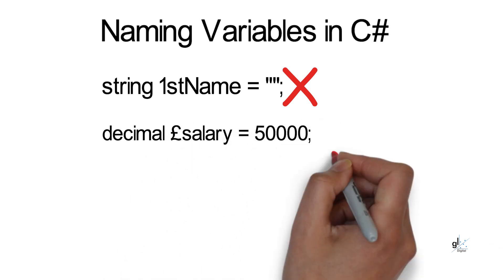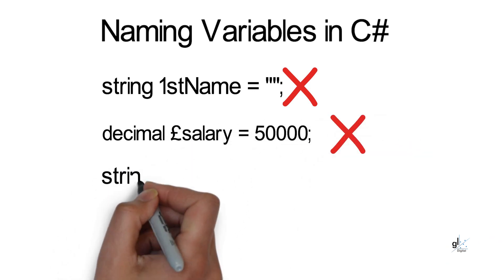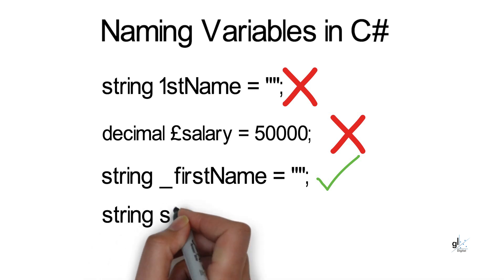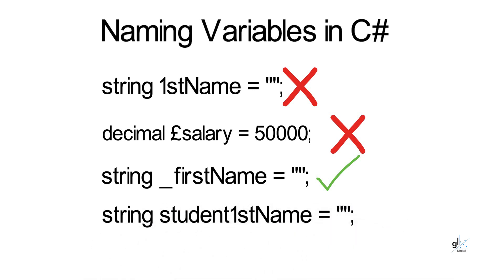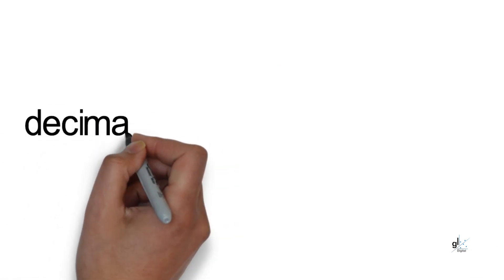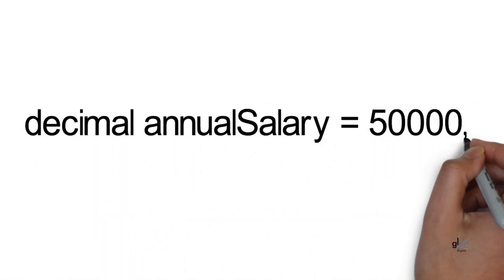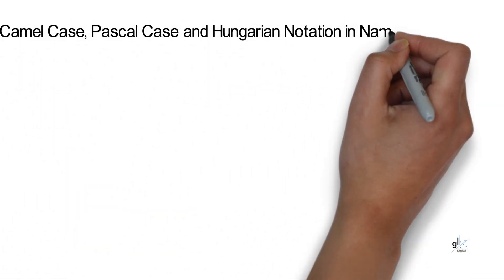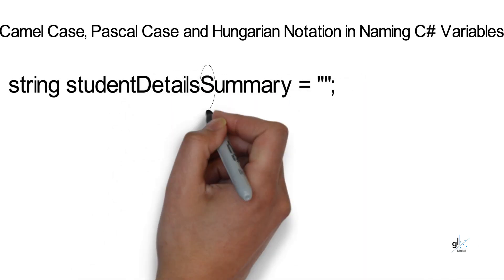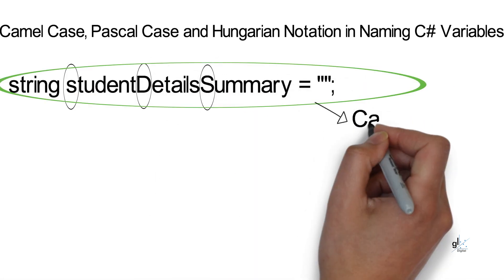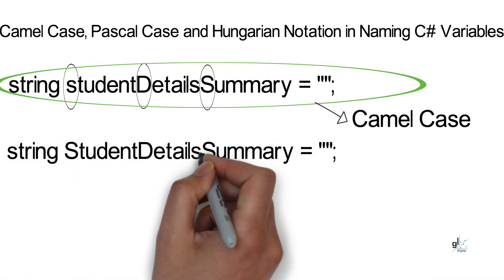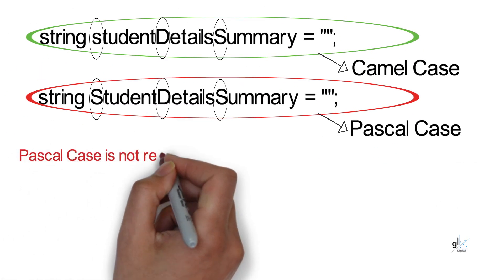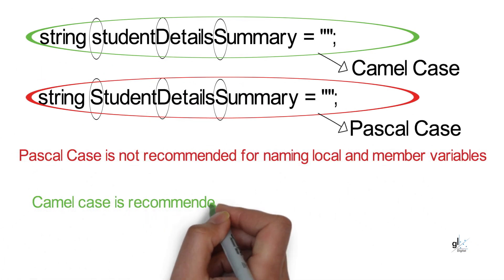I like to use the underscore to define private member variables for classes. This is effective in distinguishing at a glance between, for example, local variables for methods and constructors and private member variables of the class in which they reside. You can include numeric values within your variable names as long as they do not appear at the beginning of the variable name. My advice for naming variables is keep them concise and descriptive. It is recommended that local method variables and member variables should use camel case, which means each distinct word in a variable name begins with an uppercase character, except the first word which begins with lowercase. For property, method, class, and struct identifiers, Pascal case is recommended.